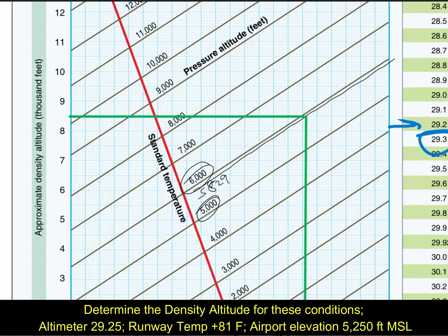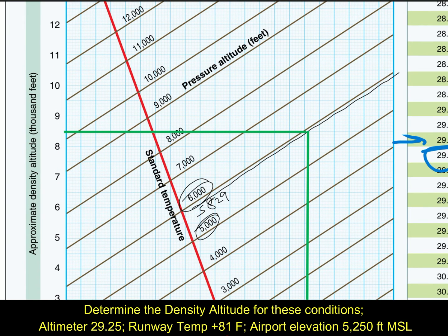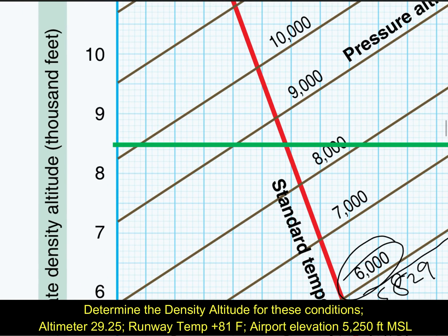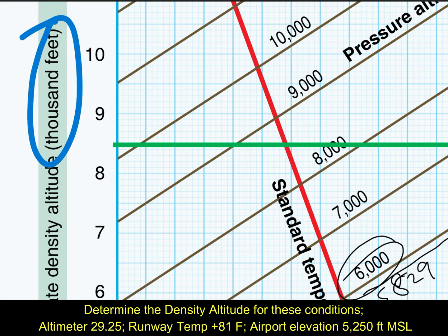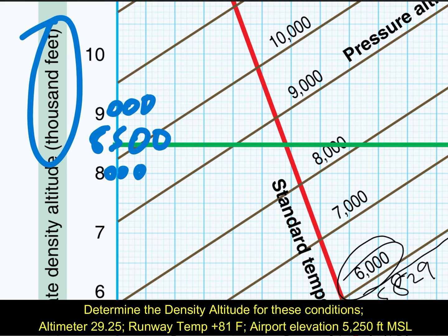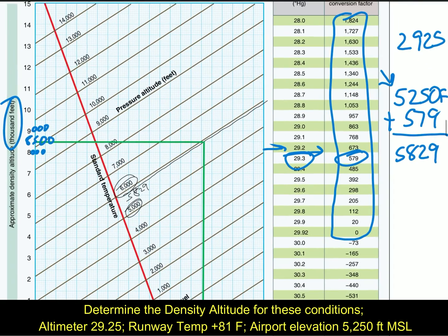We take that intercept point straight across to read our density altitude in thousands of feet. We've got 8000 on one side and 9000 on the other, so being right in the middle, it's 8500. The answer is 8500 feet.